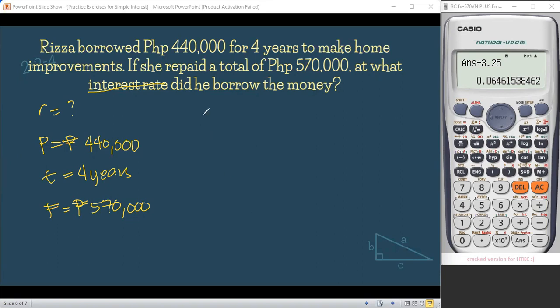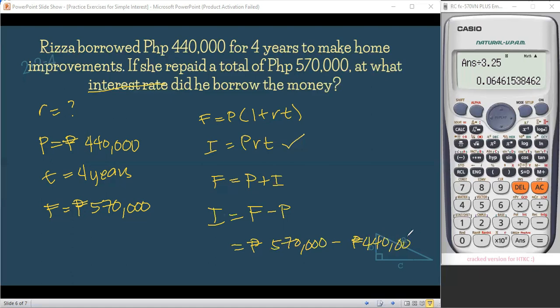So earlier we used F equals P times one plus RT. Because we're dealing with future value. So meaning we can use this. But we can also use I equals PRT. It depends on what you're comfortable with in this problem. So we know that the future value is actually the present or the principal plus the interest. Right? So the future value is 570 and we are looking for the interest if this is what you want to use. So we have I equals the future value. So the previously positive principal, when moved to the other side, that will be negative. So that is 570,000 pesos minus the principal amount of 440,000 pesos. That will give us 130,000 pesos. So our interest is 130,000 pesos.